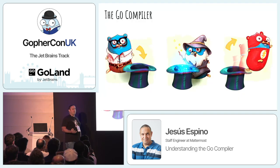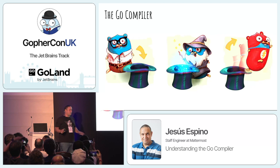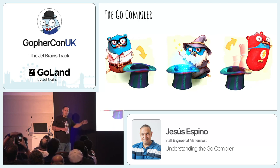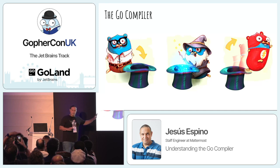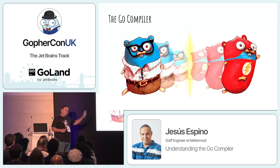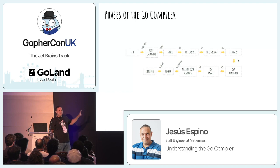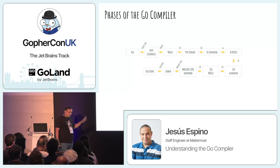This is how a compiler normally works. You have your Go code, you put that somewhere, and there's this magician — the Go compiler — and suddenly you have a super fast binary executable code that can even be cross-compiled to other architectures. But what happens inside the hat? We are going to go through all these phases of the compiler. This is a map you'll see over and over again.